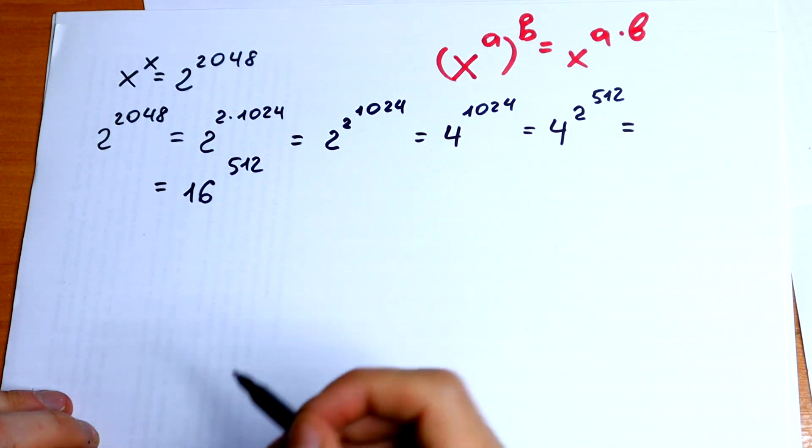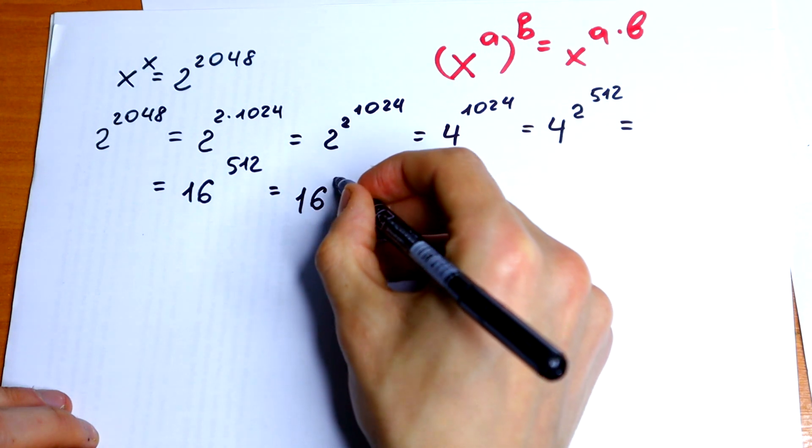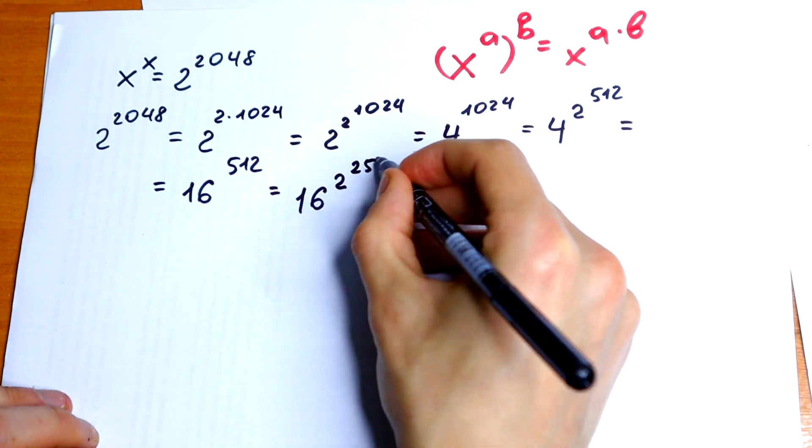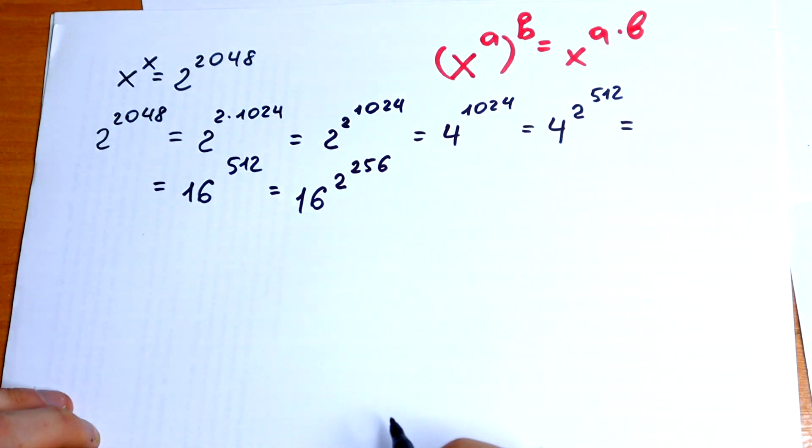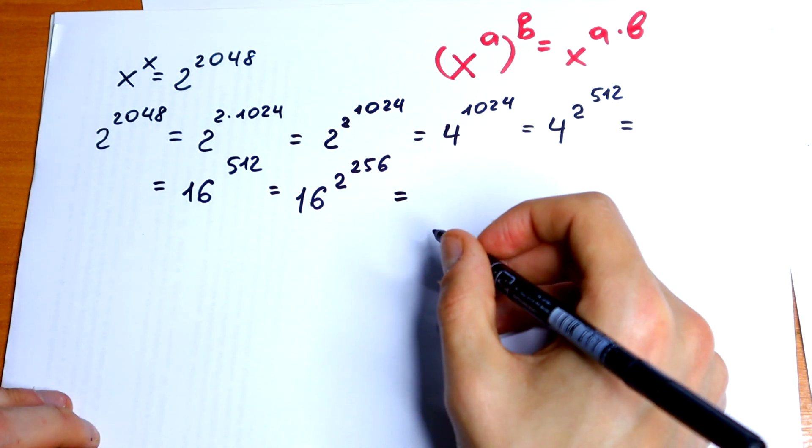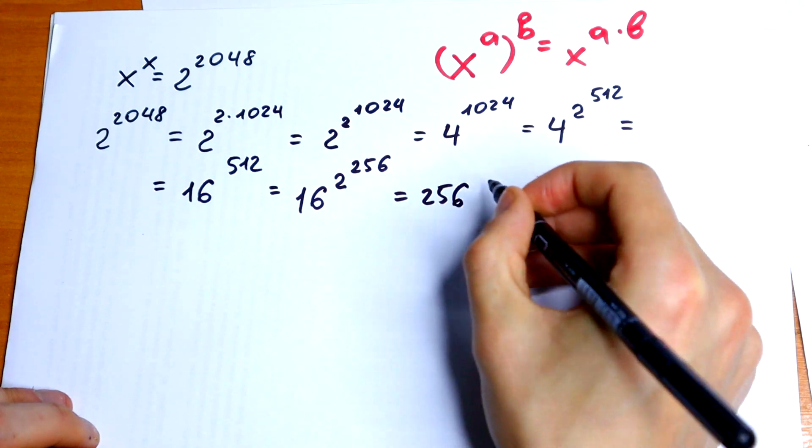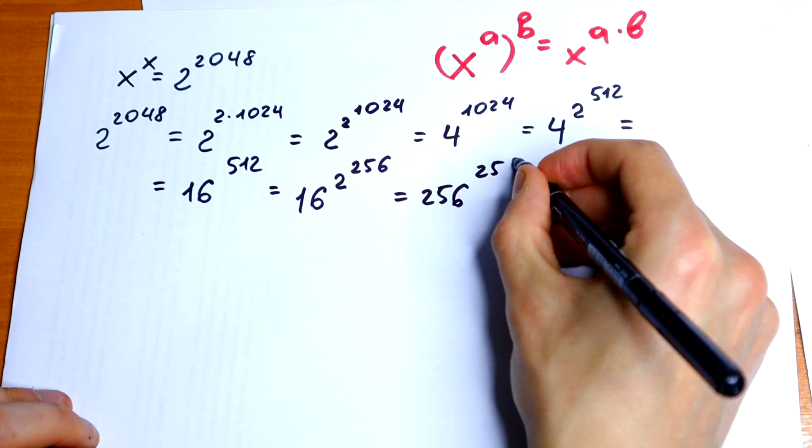Let's do this step once more. So, we will get 16 to the square power, all raised to the power 256. 16 to the power 256. 16 square will be equal to 256 to the 256 power.